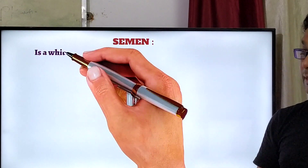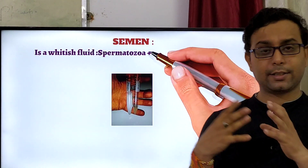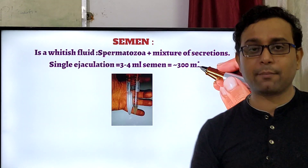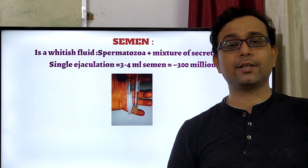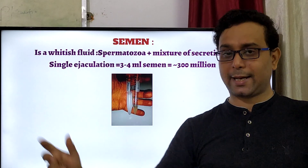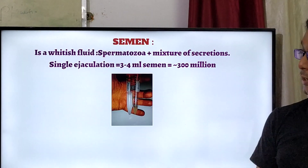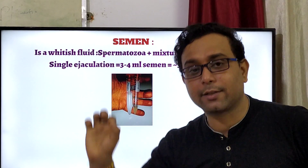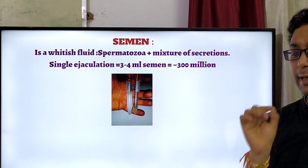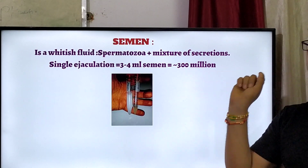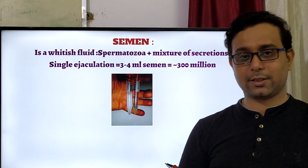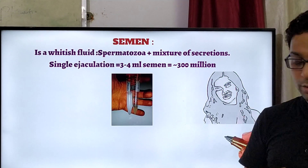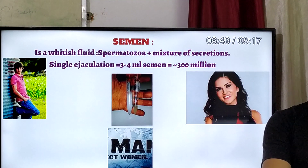Semen is a whitish alimentary fluid — a mixture of spermatozoa, that means sperm, and secretions of different glands. In a single ejaculation, 3 to 4 ml of semen is secreted from the body, which contains approximately 300 million sperm. So the semen is the most important part.